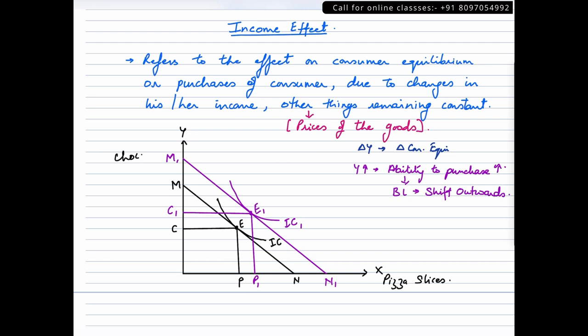Now it is not necessary that every time the income would go up. Several reasons may bring the income down. When the income of consumer falls, his ability to purchase will also fall.